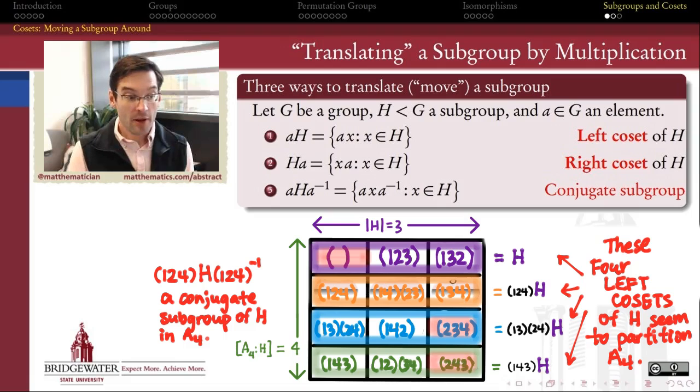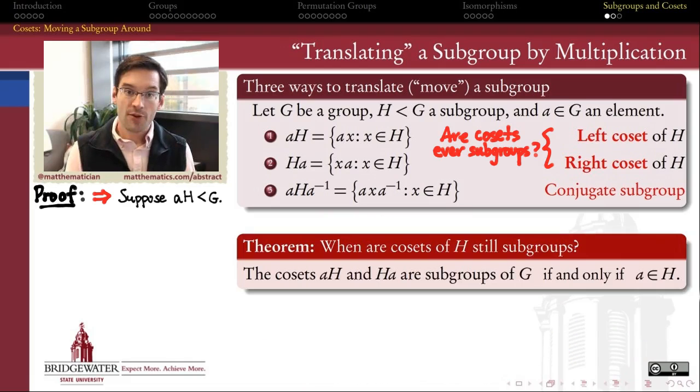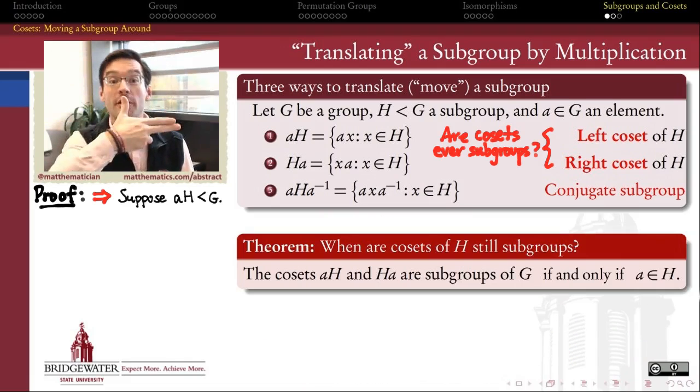So in our example, the only left and right actions that give me a subgroup when I act on H are the actions by the identity, the actions by (1,2,3), and the actions by (1,3,2). That if I use any of these as the element that I'm acting on H by, then the result is going to be a subgroup. But if I apply a left or right action using any other element of the group, that it will not produce a subgroup.